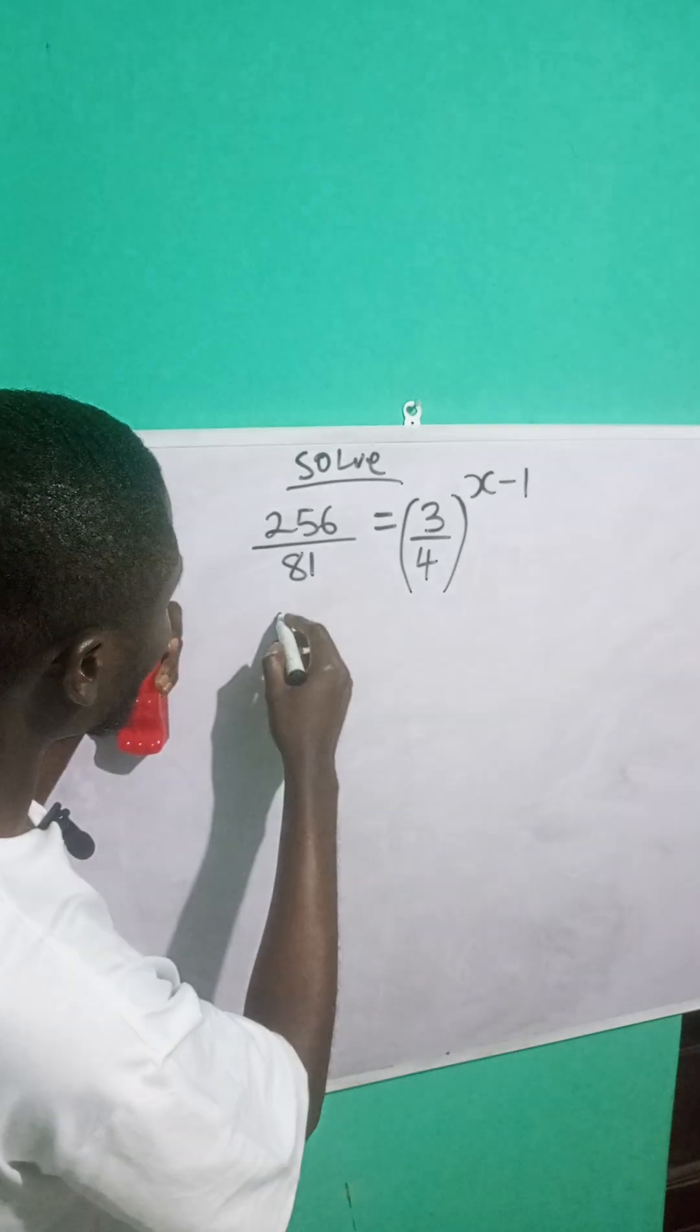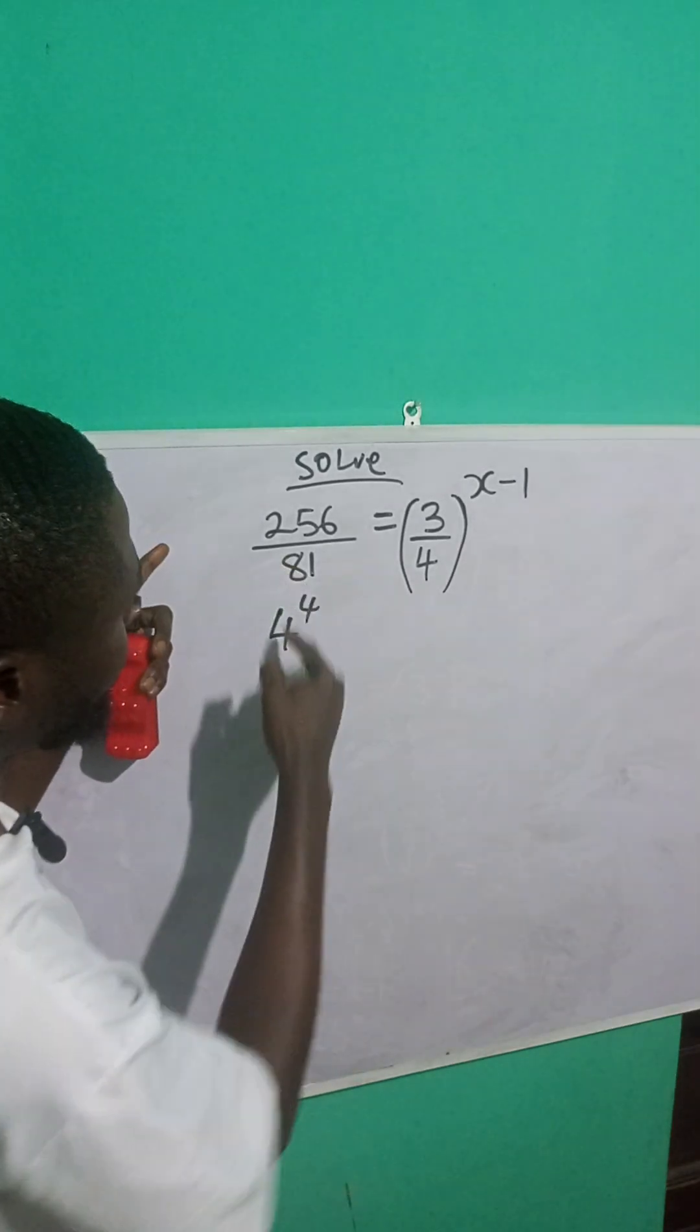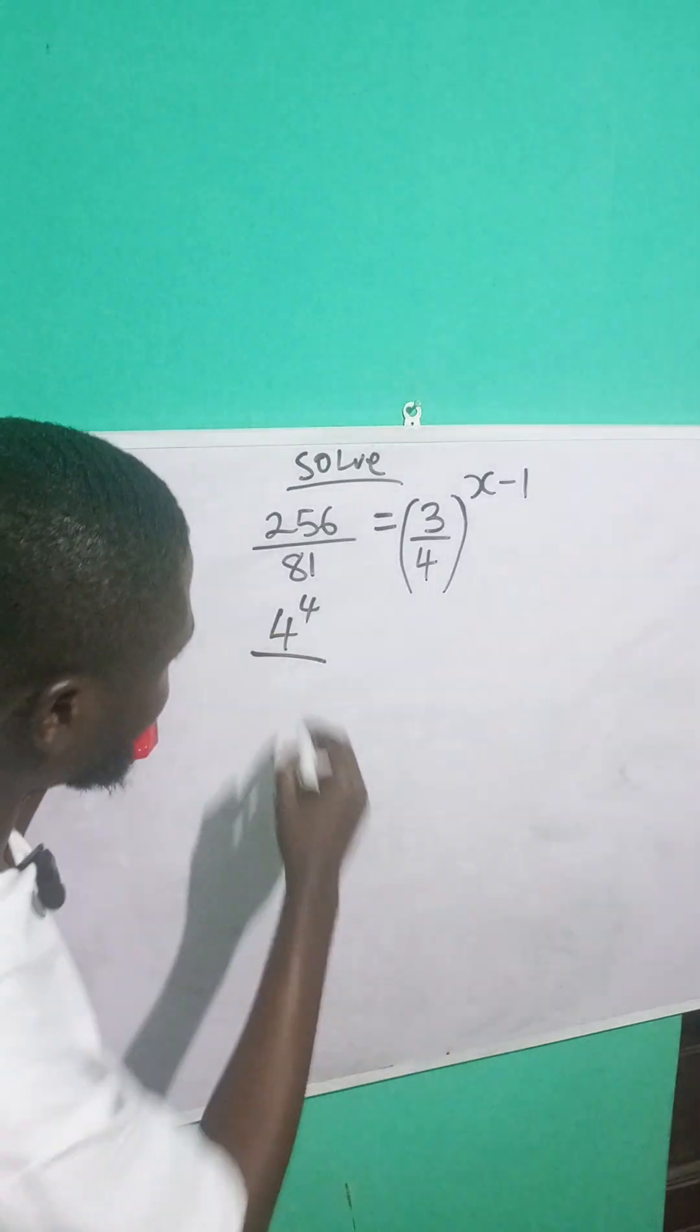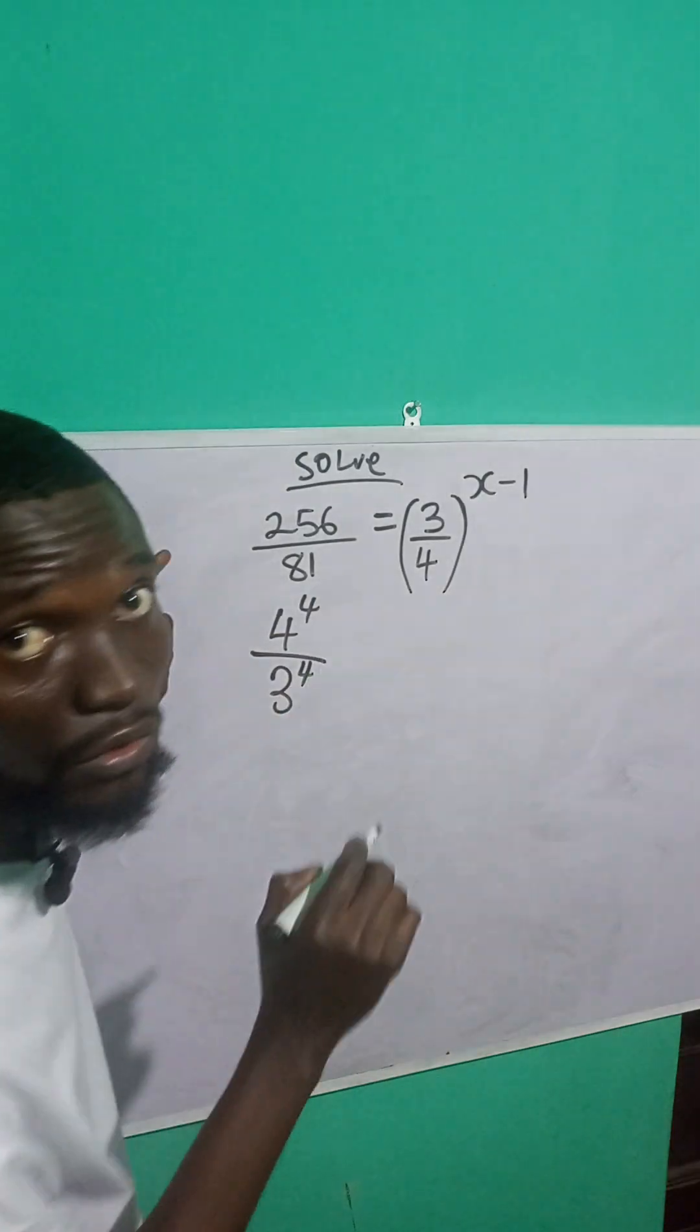Now notice that 256 can be written as 4 raised to power 4, because 4 raised to power 4 will give you 256. 81 can be written as what? 3 raised to power 4, right?